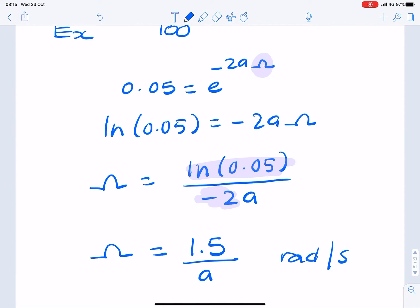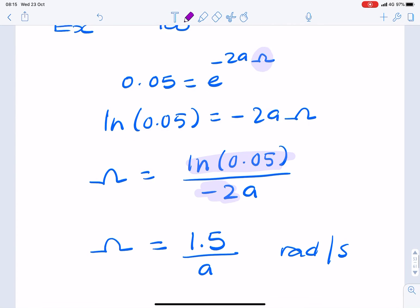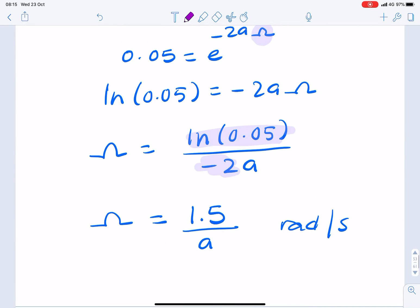So if we wanted to convert that into frequency in hertz, we'd say it's 1.5 over 2 pi a, equals 0.24 over a hertz.